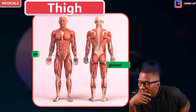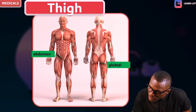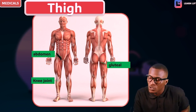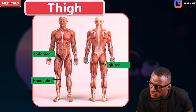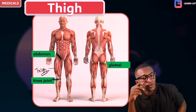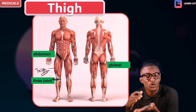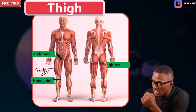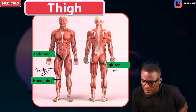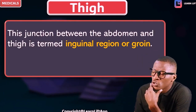Let's look at more diagrams. You can see this is the gluteal region and this is the abdominal region. This is the inguinal ligament, and this is the knee region. Between the inguinal ligament and the knee region is what we call the thigh. The thigh lies between the knee region and the inguinal ligament. Above the inguinal ligament is the abdomen, while posteriorly we have the gluteal region.